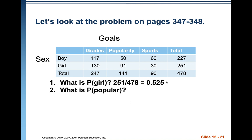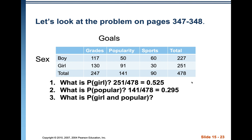What's the probability that a girl wants to be popular above all else — that is, the probability of wanting popularity given that the student is a girl? Instead of all 478 students, we restrict to the 251 girls. Our numerator is still 91, but the denominator is now 251. So 91/251 = 0.363.